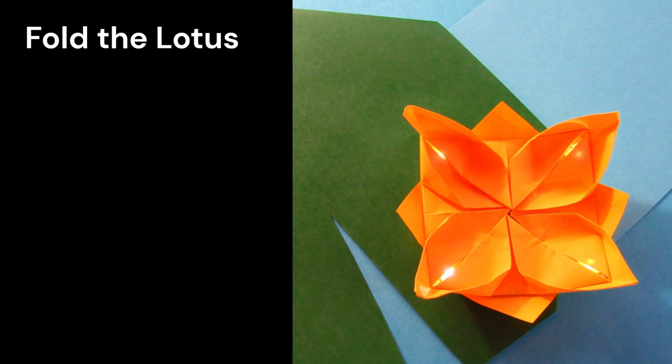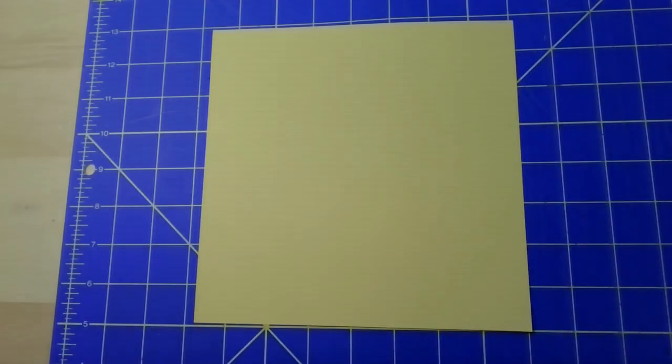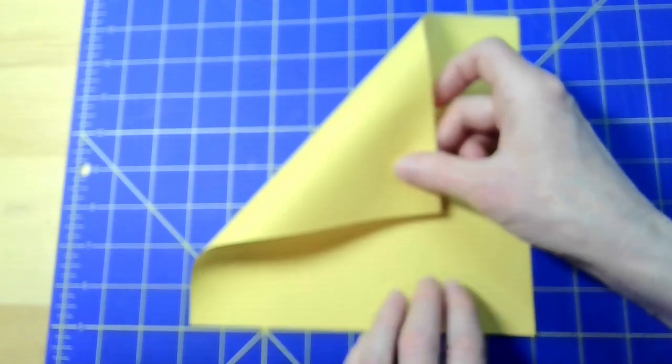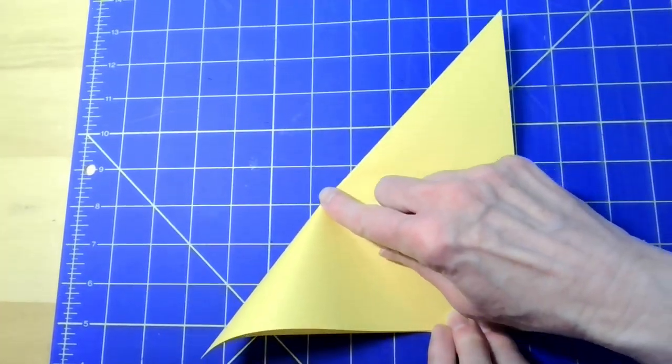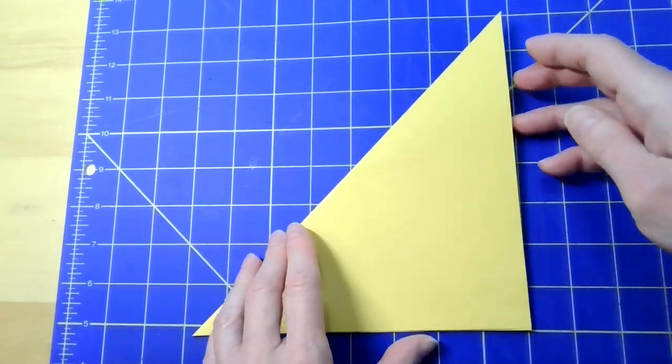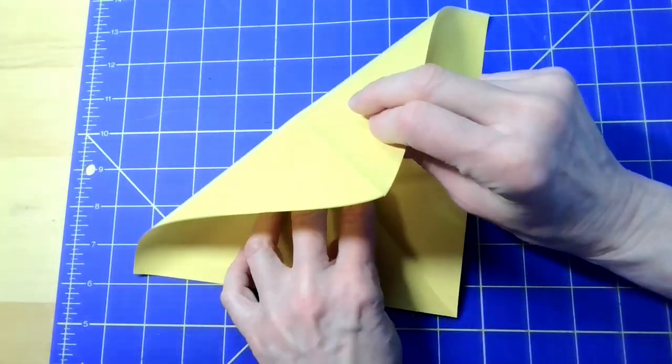Let's see how to fold the lotus. Take the origami paper and fold the opposite corners together to make a diagonal crease. Fold and then repeat in the other direction.